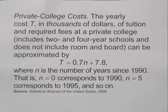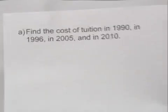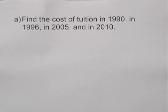That is, N equals zero corresponds to 1990, N equals five corresponds to 1995, and so on. We are asked to find the cost of tuition in 1990, in 1996, in 2005, and in 2010.